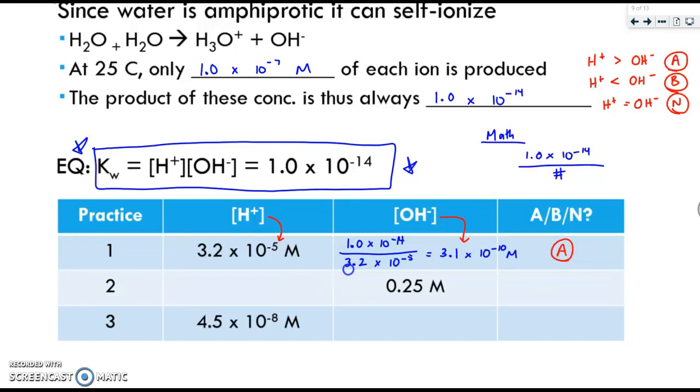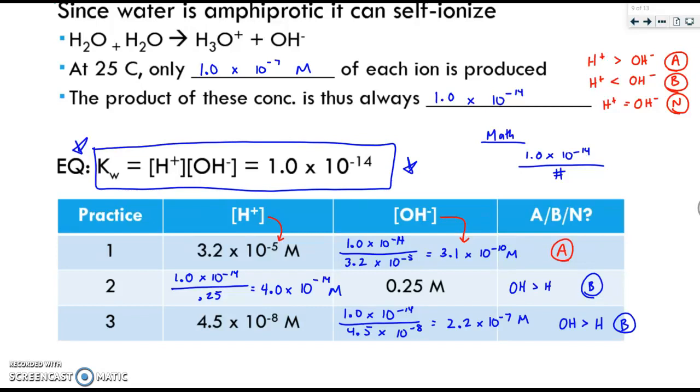Please pause the video and try the remaining practice problems. Please check your answers. For number 2, we did our math. And then we found that the OH was a lot larger than the H. Therefore, it is basic. For number 3, we did our division. And once again, you see that the OH is greater than the H plus because negative 7 exponent wise is larger than negative 8. So once again, this is basic.